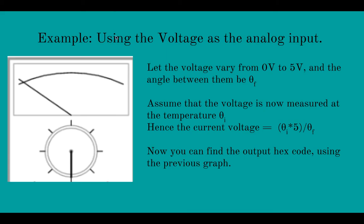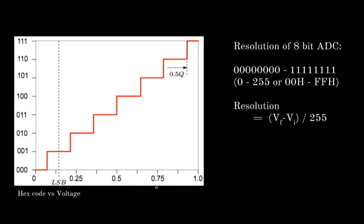For the experiment we did for using voltage as the analog input, we had the knob vary from 0 to 5 voltage with an angle between them to be theta final. Assume that the voltage at any angle here, a random angle here, would be theta i. Hence the current voltage would be equal to theta i times 5, so 5 minus 0 divided by theta final. So this voltage if we plot it on this graph, the corresponding hex code will be shown on the y-axis.